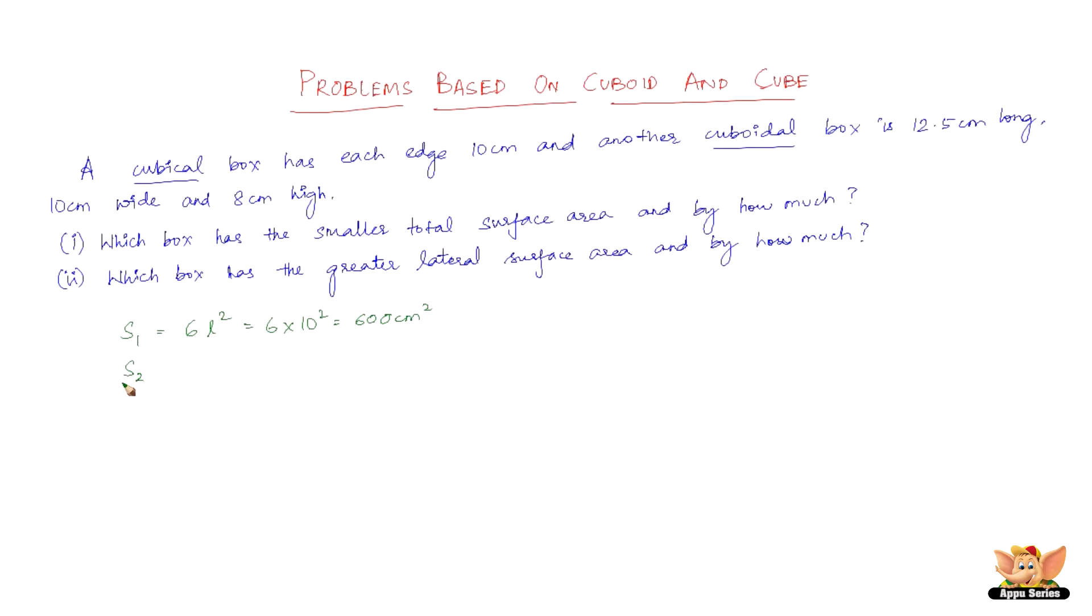Now, let us go to S2 which is the total surface area of the cuboid here. That is nothing but, the formulae is 2 into length into breadth plus breadth into height plus height into length. Which is nothing but 2 into, length is 12.5 so 12.5 into 10 plus 10 into 8 plus 8 into 12.5 cm square. This is nothing but, 2 into 125 plus 80 plus 100 cm square. Which comes to 610 cm square.